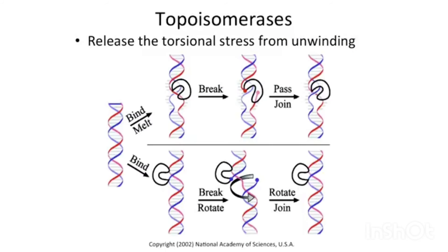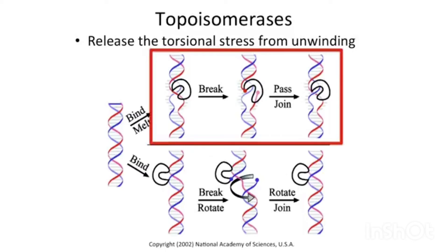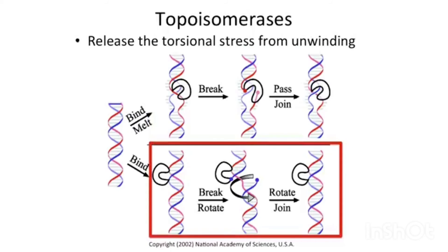There are two strategies that topoisomerases use. One is to break one of the strands of DNA, to pass the intact strand through the breakpoint, and then to reseal the strand. The other uses a break in a DNA strand followed by a rotation around the strands to relieve the unwinding, then resealing the breakpoint. The two have an equivalent impact — they both release the torsional stress from unwinding.